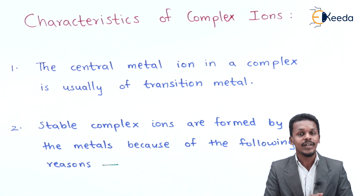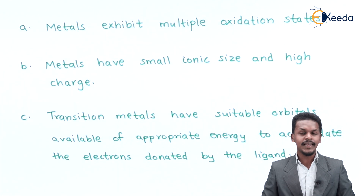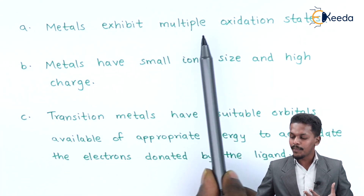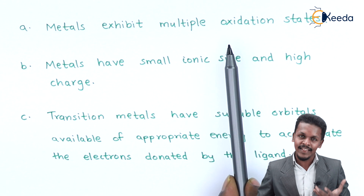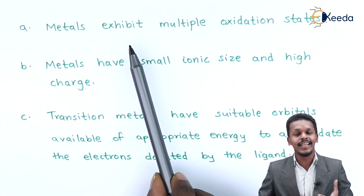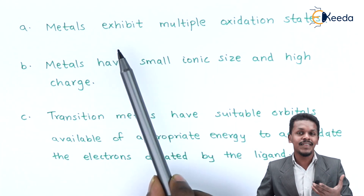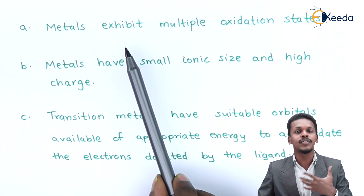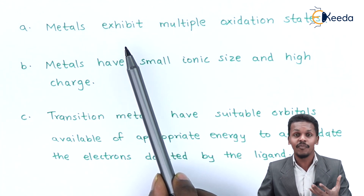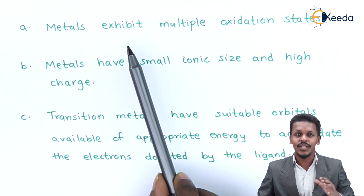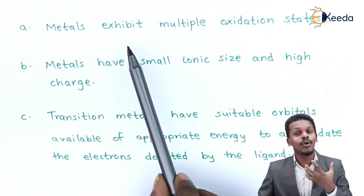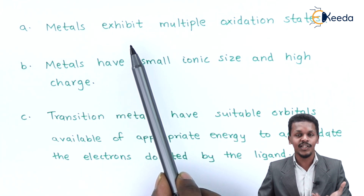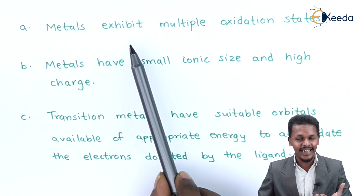Now let us talk about the reasons behind it. The first reason is the metal exhibits multiple oxidation states — especially in this case the metal represents a transition metal. All the D block elements exhibit multiple oxidation states. For example, cobalt can exhibit the oxidation state of +3 as well as +2. So all the D block elements or transition elements have variable oxidation state.